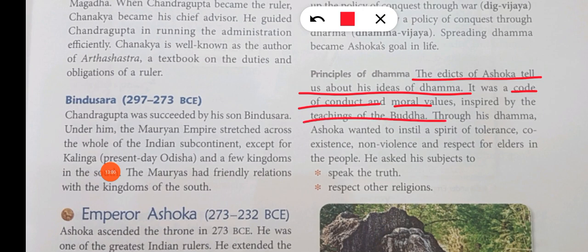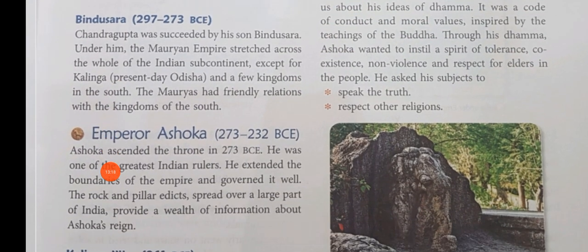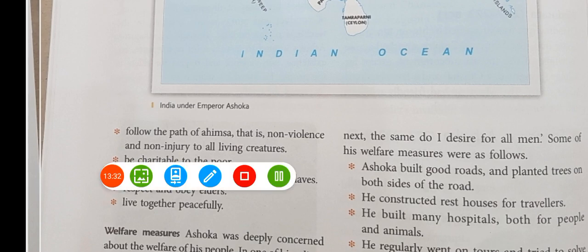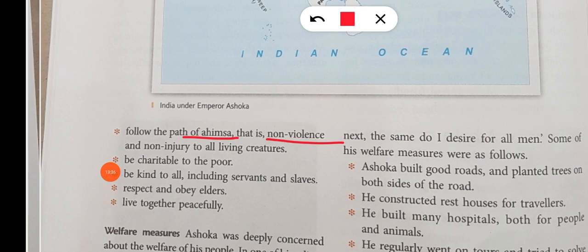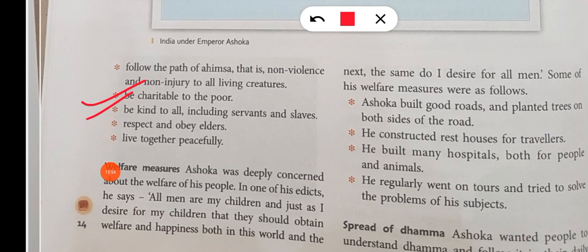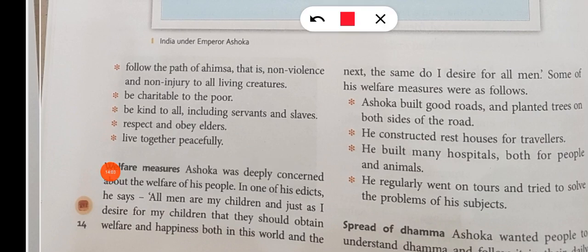Through his Dhamma, Ashok wanted to instil a spirit of tolerance and non-violence. He encouraged people to respect their elders, speak the truth, always respect other religions, and follow the path of ahimsa — that is, non-violence and non-injury to all living creatures. He also urged people to be charitable to the poor, be kind to all including servants and slaves, and respect and obey elders.